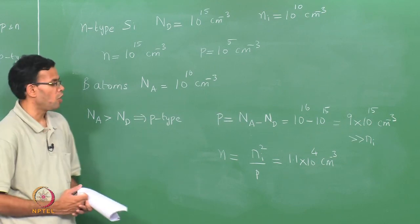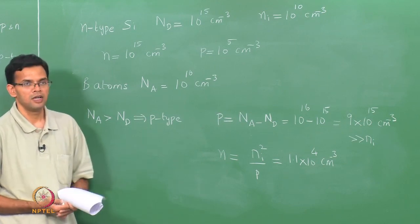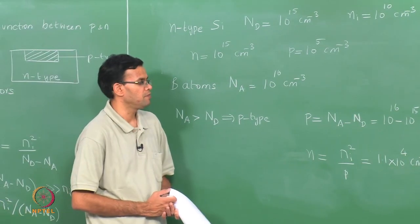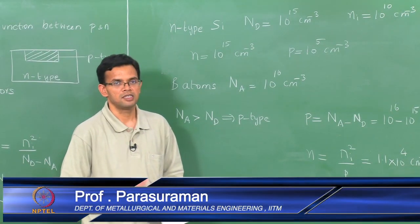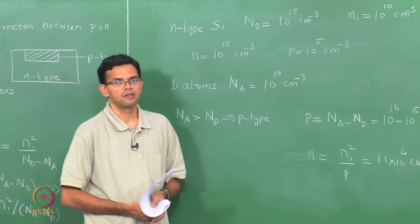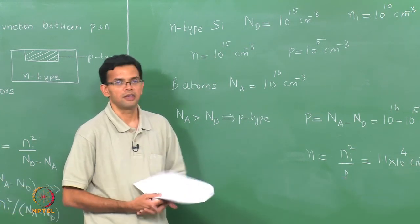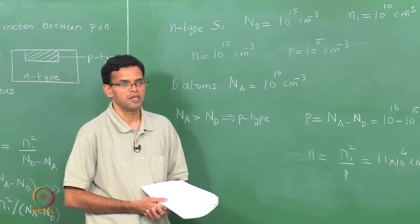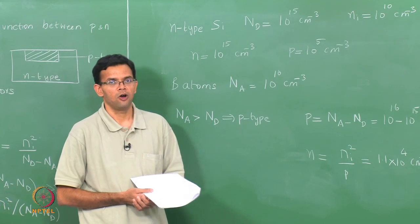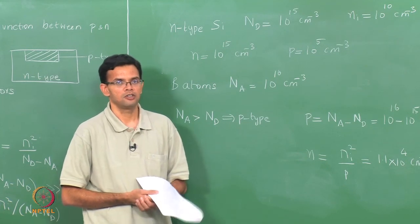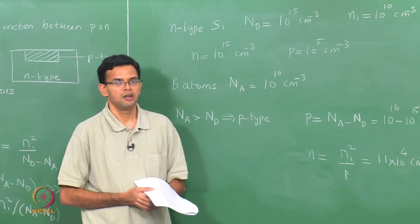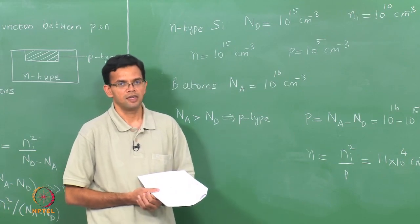We will stop the class here for today. In the next class we will look at the position of the Fermi energy in the case of an extrinsic semiconductor and the behavior of carrier concentration with temperature. We will also explain how all donors or acceptors are ionized at room temperature.